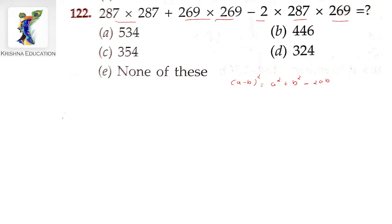We have the same pattern in this question: 287 multiplied by 287, plus 269 multiplied by 269, minus 2 multiplied by 287 multiplied by 269. This follows the same formula.